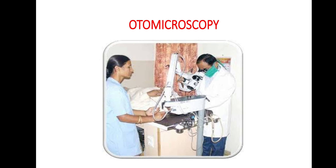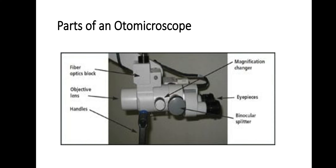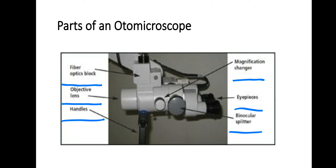This is a picture showing photomicroscopy. Parts of photomicroscopy: magnification changer, eyepieces, binocular splitter, fiber optic block, objective lens, and handles.